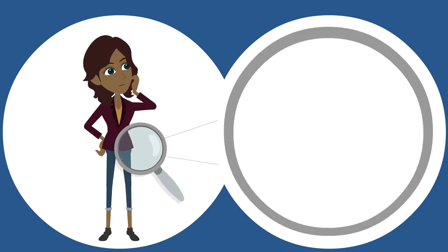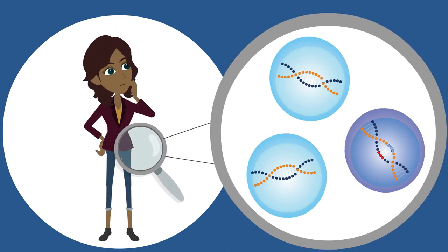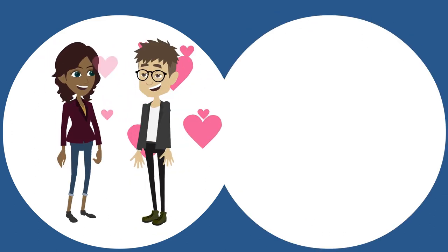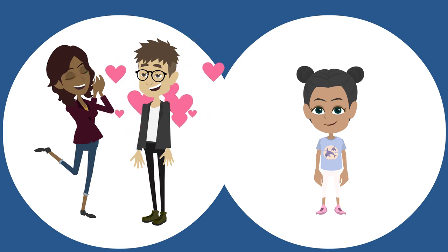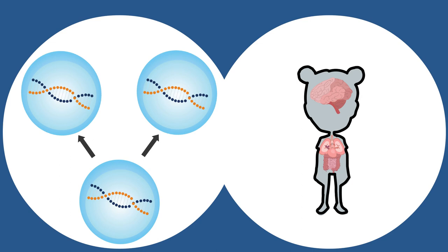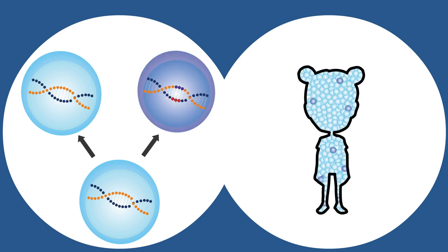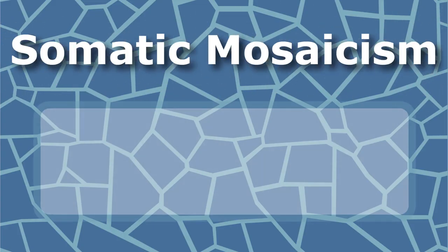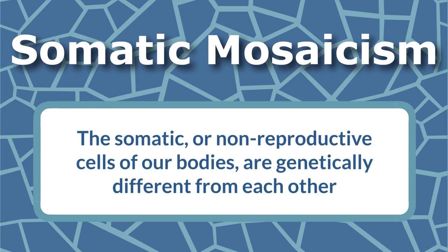Did you know that the DNA sequences in the cells throughout our body are not always identical? We all inherit a unique DNA sequence from our parents when we're conceived. But as our cells multiply and become the various tissues of our bodies, the DNA sequences in some of these cells change and can be passed down to subsequent cells. This can lead to somatic mosaicism, which means that the somatic, or non-reproductive, cells of our bodies are genetically different from each other.